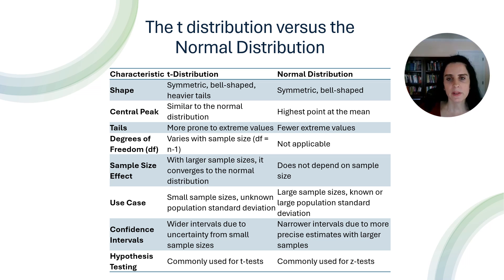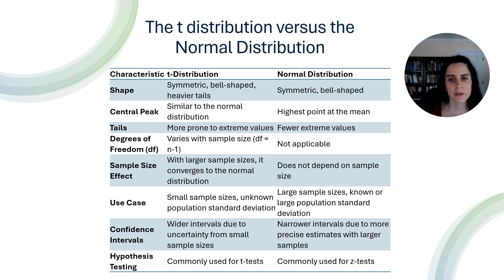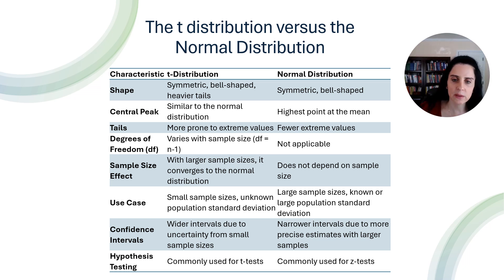The table on this slide summarizes the main differences between the T-distribution and the normal distribution. Due to its applicability to smaller sample sizes and data that do not have a perfectly normal distribution, the T-distribution is most often used in practice. It is used primarily in hypothesis testing, especially for smaller sample sizes, and is essential in constructing confidence intervals for the means when the population standard deviation is unknown.